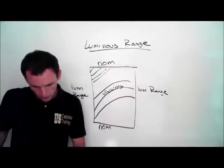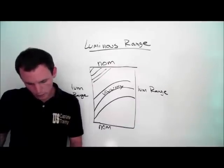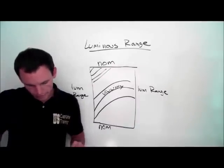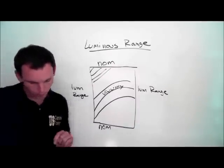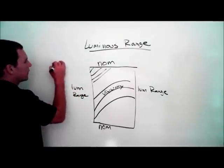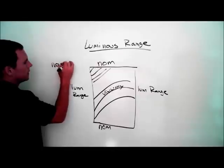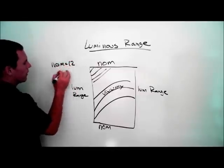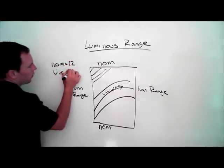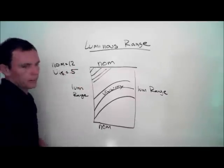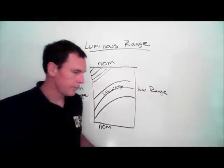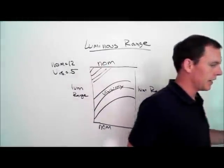The light list shows that a navigational light has a nominal range of 12 miles and visibility of 0.5 miles. So we have a nominal range equal to 12 miles and a visibility equal to 0.5. Let's break out our graph and check this out.